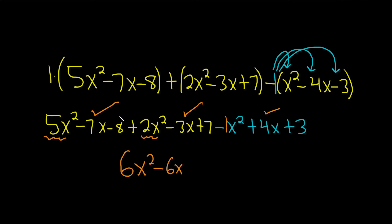And then last but not least the numbers. We have negative 8, and then here we have a 7 and a 3 so that's 10. So negative 8 plus 10 is 2.